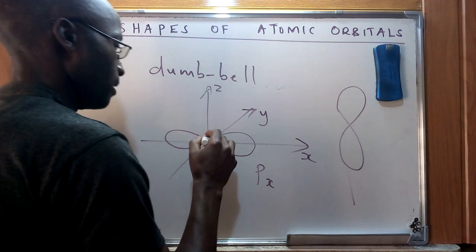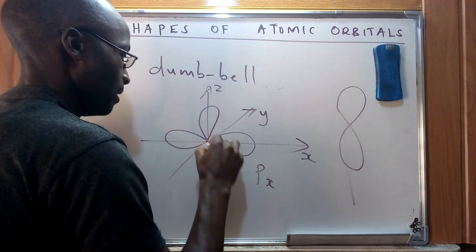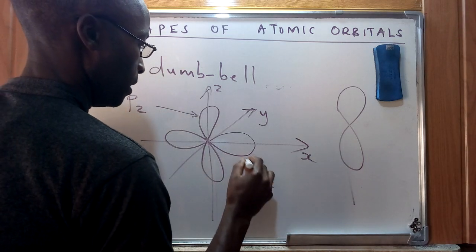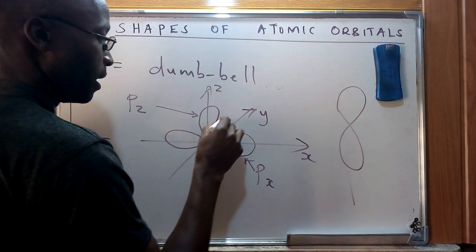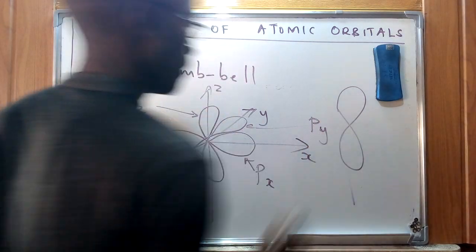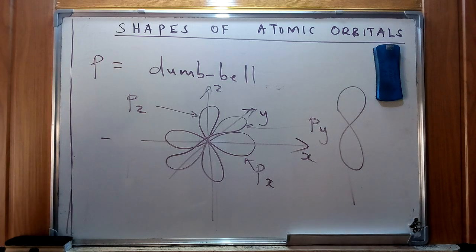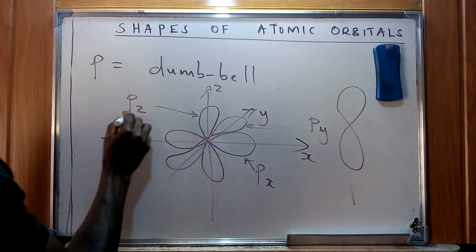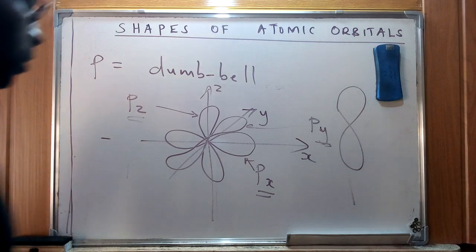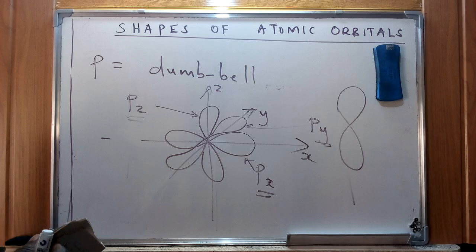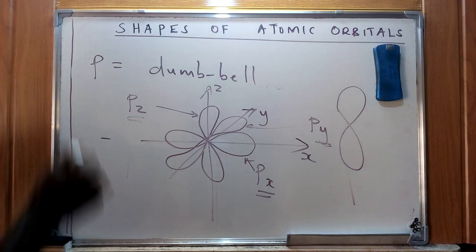If the p orbital is aligned along the y axis, it is called py. Therefore, the p orbital assumes three different dumbbell-shaped forms — px, py, and pz — each lying along a specific axis. This is the second orbital type we have described.